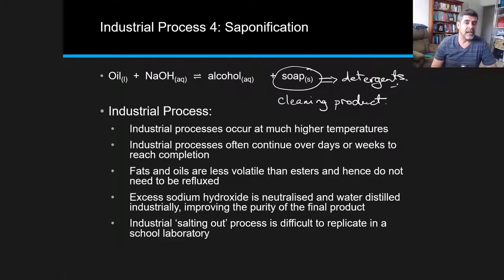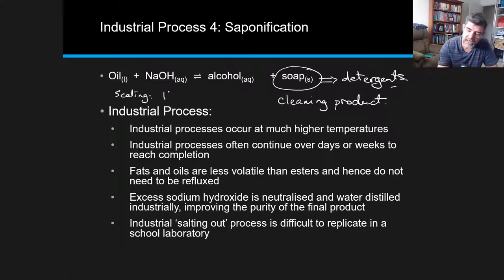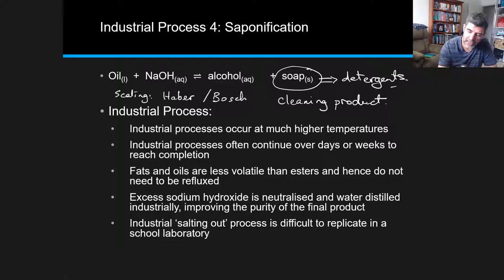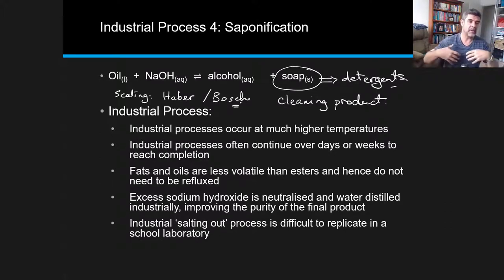One of the important things about industrial use is that we need to look at scaling. We've previously looked at the Haber process, which was a process for the production of ammonia. It was a very successful reaction, but it wasn't an industrial process. It was actually Carl Bosch who industrialised the process — who scaled it up to the point where it became industrial and large scale, meaning we could produce ammonia on a big yield basis, and therefore it became commercially viable.